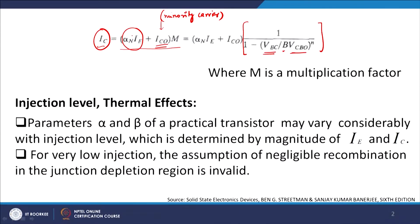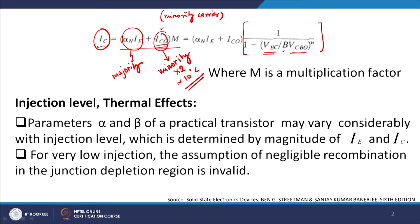The majority carrier contribution and the minority carrier contribution together make up the collector current. With rise in temperature, minority carrier contribution almost doubles for every 10 degree rise in temperature, which means the collector current doubles itself due to minority current carriers if you raise the temperature. We will come to that when we discuss other effects in subsequent slides.